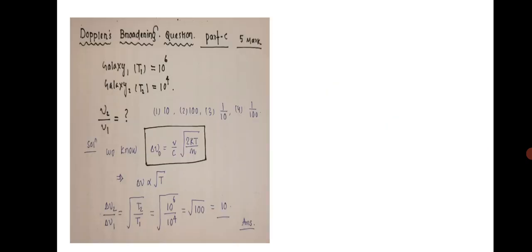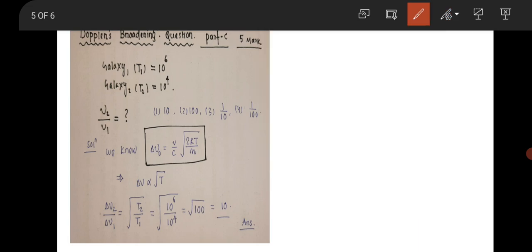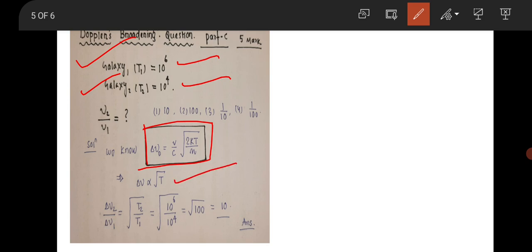The next question is from Doppler broadening, carrying 5 marks in Part C. Two galaxies are given with individual temperatures: one galaxy has temperature 10^6 and the other 10^4. The question asks to find the ratio of Δν₂ to Δν₁. The Doppler broadening frequency formula is Δν_D = (ν/c)·√(kT/m), so Δν is proportional to √T.